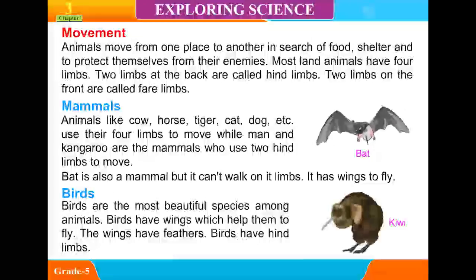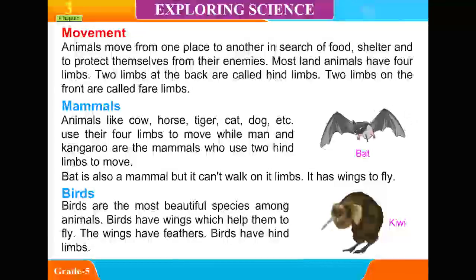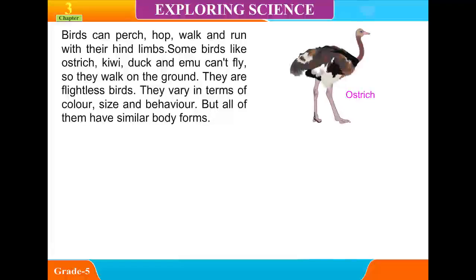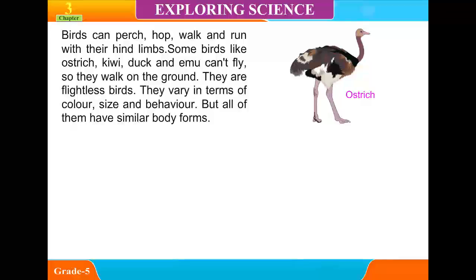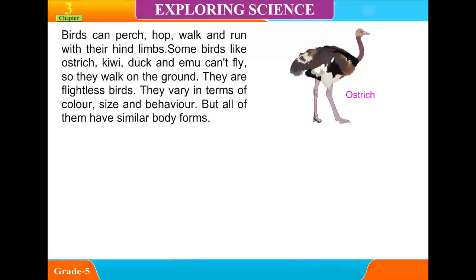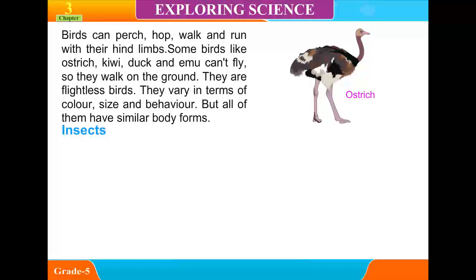Birds: Birds are the most beautiful species among animals. They have wings with feathers that help them fly. Birds also have hind limbs and can perch, hop, walk, and run with them. Some birds like ostrich, kiwi, and emu cannot fly; they walk on the ground and are called flightless birds. Birds vary in terms of color, size, and behavior, but all have similar body forms.